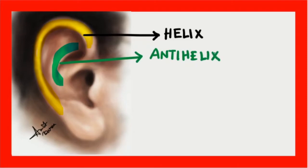Helix means the helical structure, a round rim-like structure. Now the space between the two helices — the depressed space that you can see over here — this depressed region between the two helices is known as the scapha.